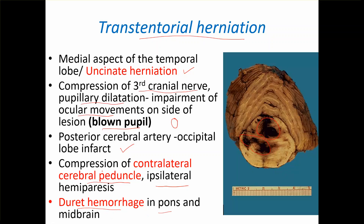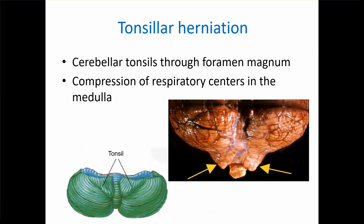Tonsillar herniation is quite extensive in the damage it can cause. The cerebellar tonsils pass through the foramen magnum — you can see the tonsils herniating here compared to the normal tonsil visible on the inferior surface of the cerebellum.